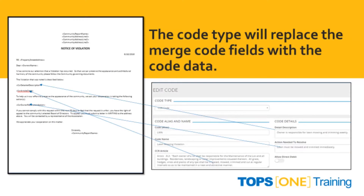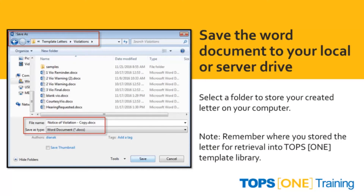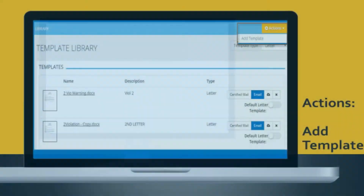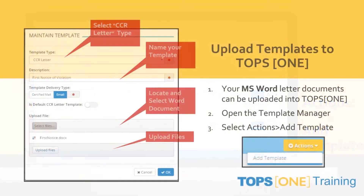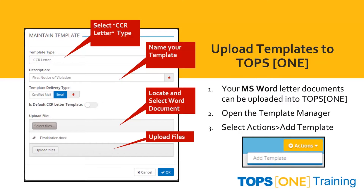The code type will replace the code fields with the actual data from TOPS One. Once you are satisfied with your document, save the Word document to your local or server drive. Remember where you store the letter for retrieval into TOPS One later when building your template library. Back in TOPS One, navigate to the template library and under Actions in the top right-hand corner, select to add a template. When uploading a template, your Microsoft Word documents can be uploaded by selecting the letter type, entering the template name, locating the Word document, and uploading the file.